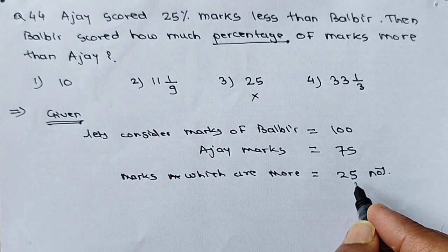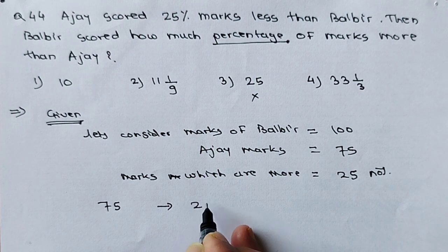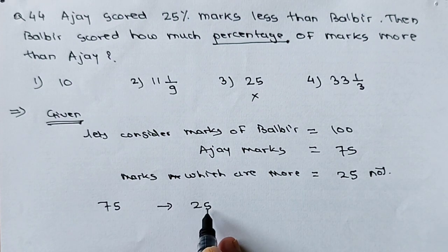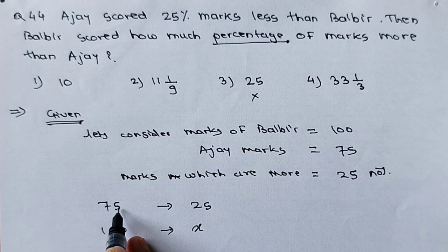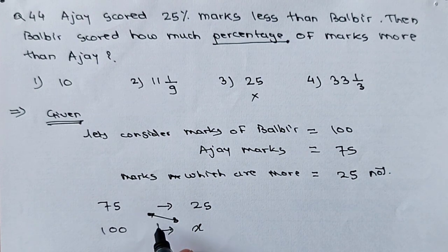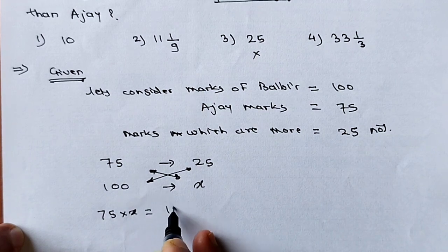For 75 marks, there are 25 marks less. This statement is very important to calculate the percentage marks. Just take the cross multiplication: for Ajay's 75 marks, Bulbier has 25 marks more. If Ajay has 100 marks, let it be X more. Taking cross multiplication: 75 into X equals 100 into 25. Solving this: X equals 100 into 25 divided by 75, which gives 100 upon 3, that is 33 whole 1 upon 3. This is option 4.